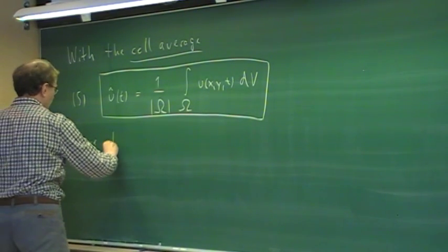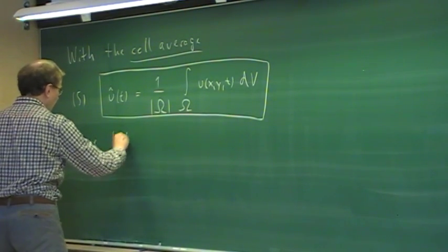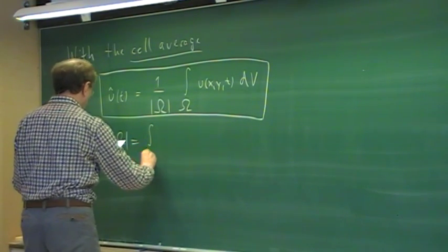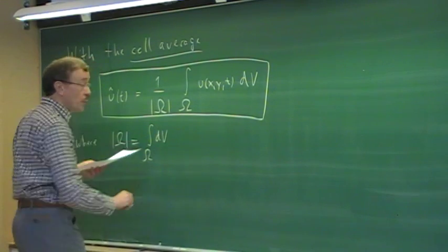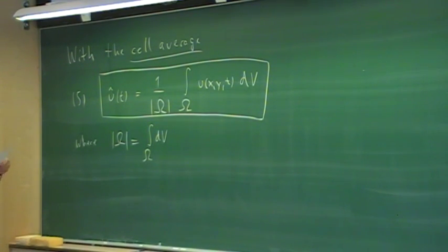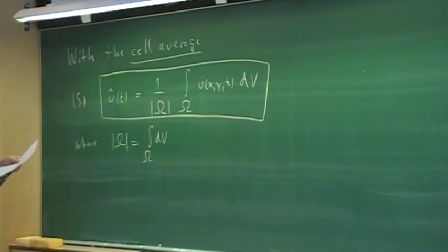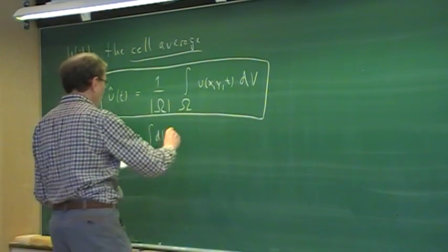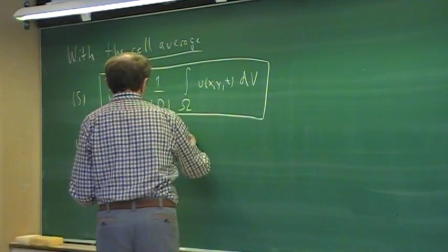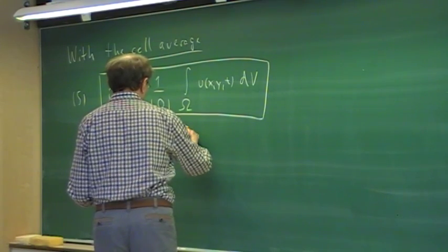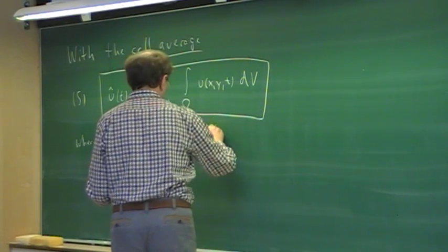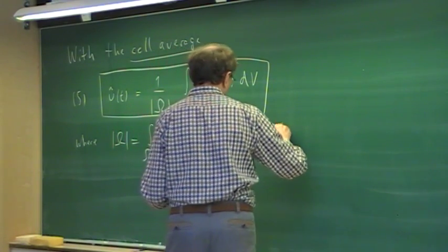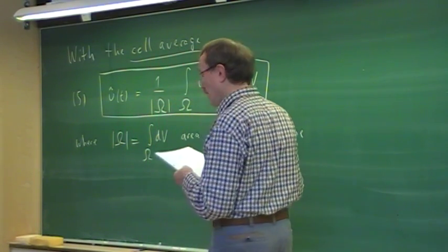The omega here denotes the volume of our control volume. We are in 2D — imagine the third dimension is just constant, one meter in the z-direction, for example. So that is then the area of the control volume. We use the term control volume for any dimension.